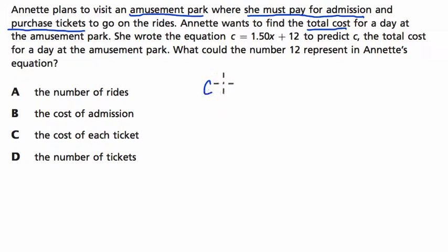She wrote the equation C, I guess for cost, as it tells us here, C, the total cost, equals 1.5, I'm going to say $1.50, times X. So that's $1.50 per X plus $12.